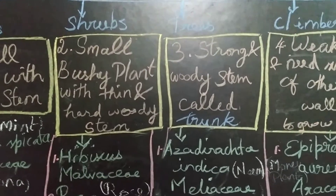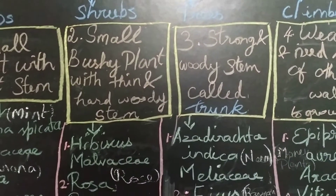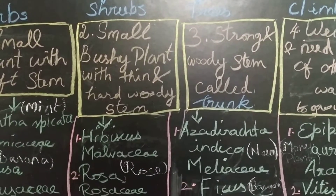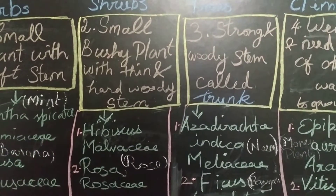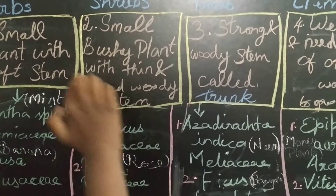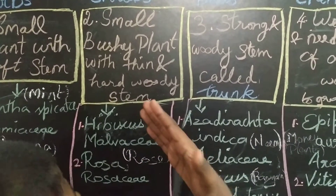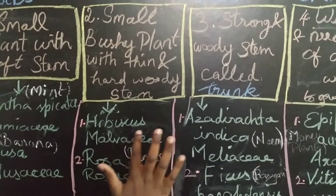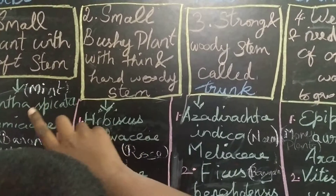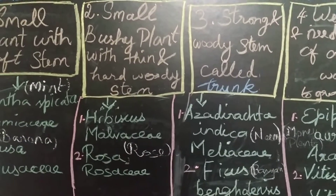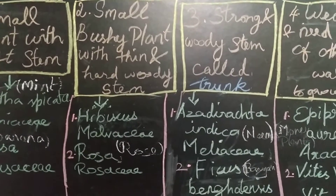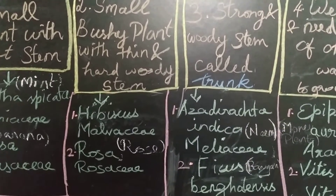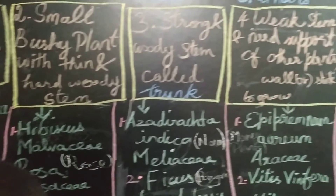The Shrub's definition is: a small bushy plant with thin and not-woody stem. The Hibiscus binomial name is Hibiscus and the family is Malvaceae. The Rose's binomial name is Rosa and the family is Rosaceae.